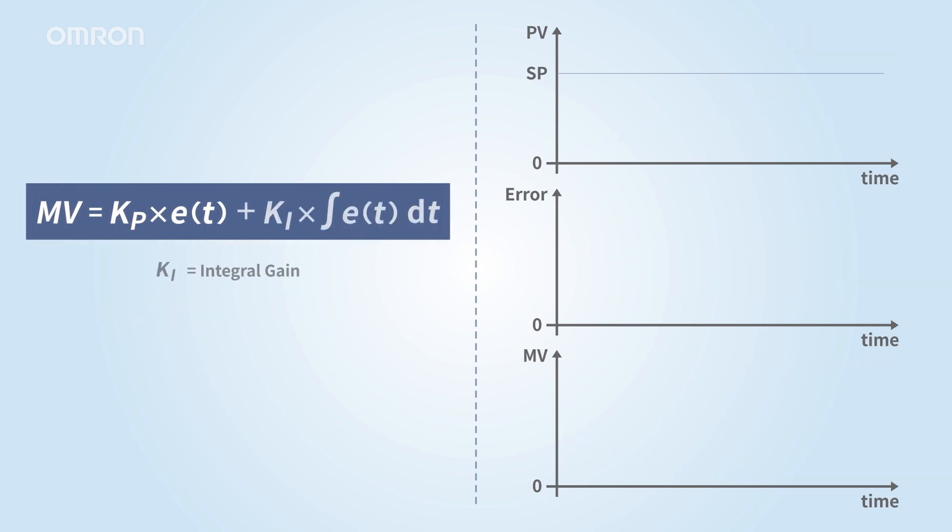Integral control is used to eliminate this offset. It adjusts the heater's output based on the duration and magnitude of the deviation. Even when the deviation reaches zero, the integral component continues to correct, aligning the temperature with the set point. With integral control, the set temperature can be reached.